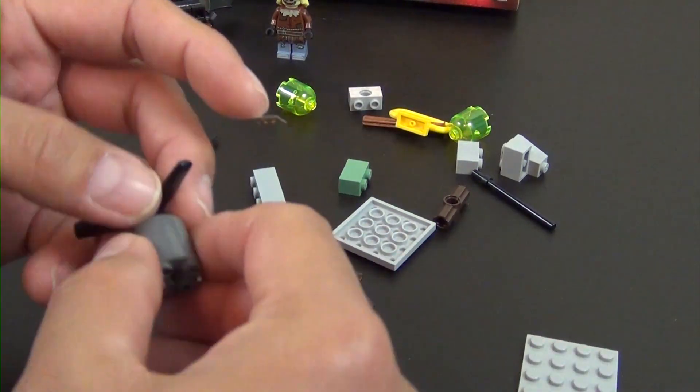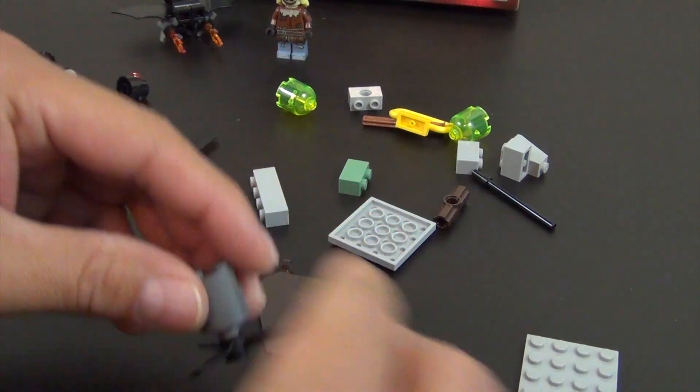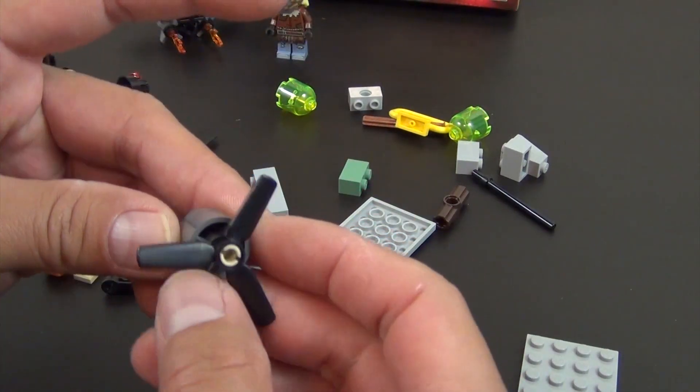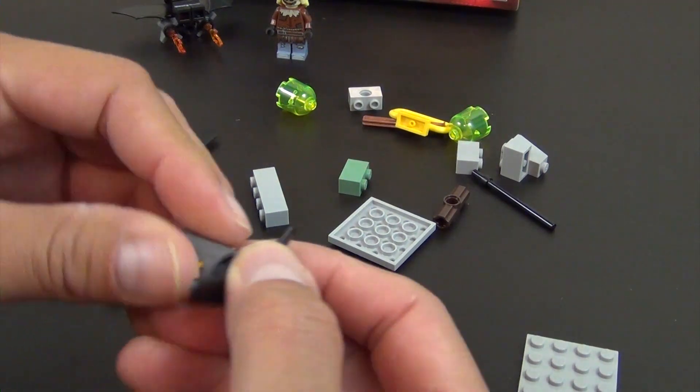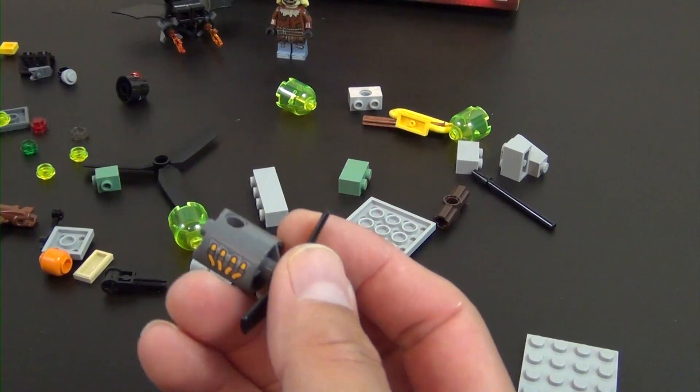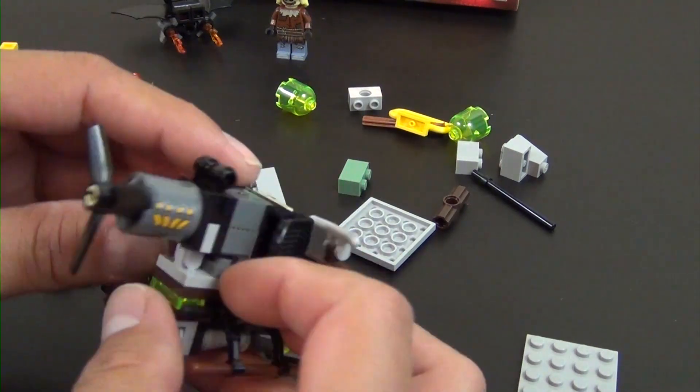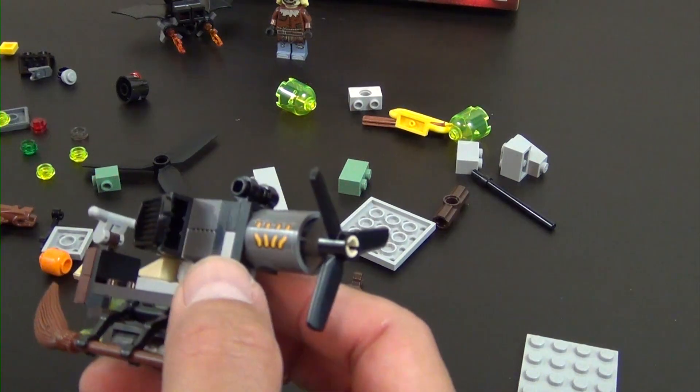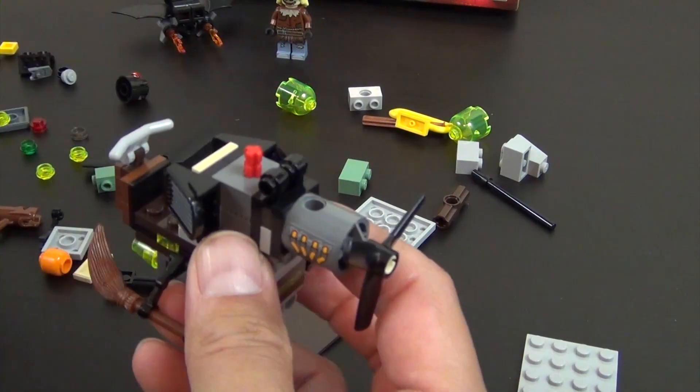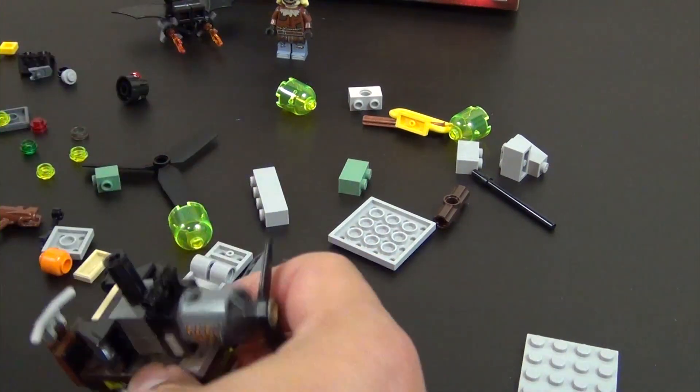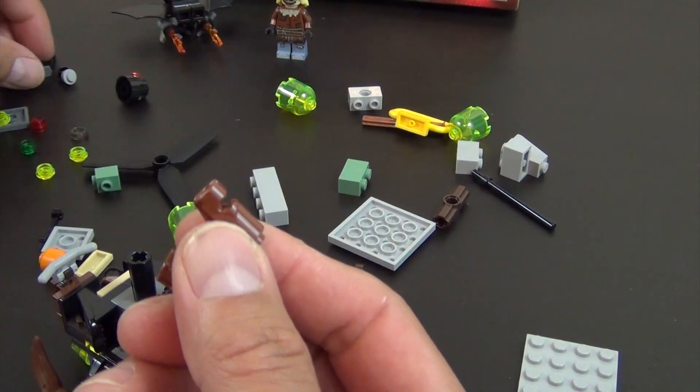All right, so now we have this round piece with a technic element in it. It's going to get a little propeller. It turns pretty well because that's a non-friction technic pin. Now we get two stickers. They're going to go on either side. That's one, there's two. It's the same sticker.